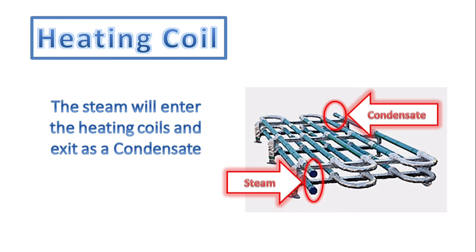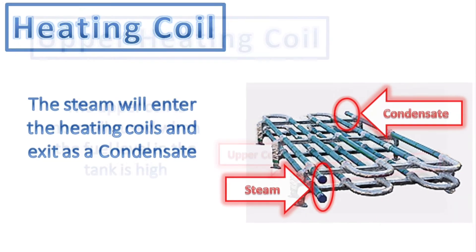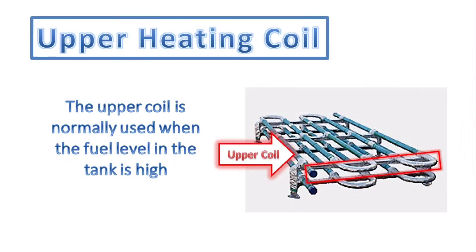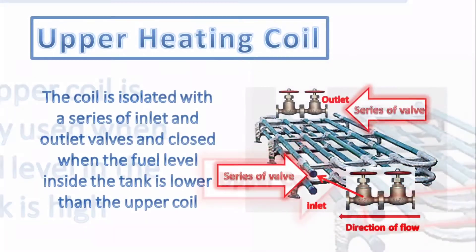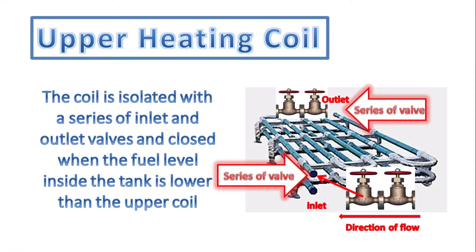The steam enters the coil via a series of non-return valves, and exits through a series of non-return valves and a steam trap to reuse the condensed steam as feed water to the boiler. The upper heating coils are installed in the upper portion of the tank and normally used when the fuel level inside the tank is still high. These coils are isolated with valves at both inlet and outlet, allowing the operator to stop steam flow when the tank is empty.